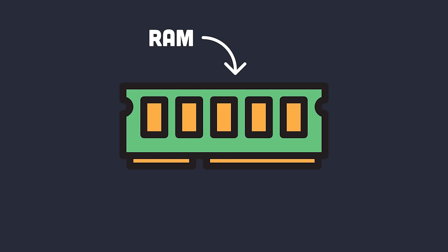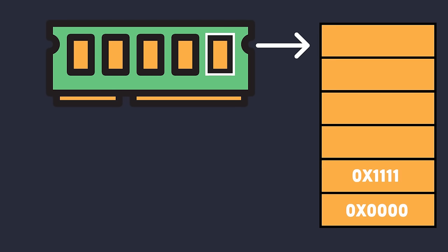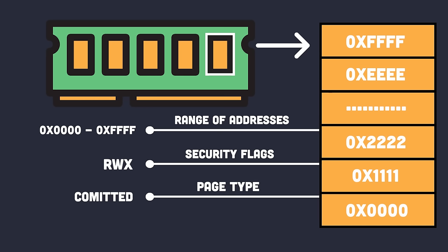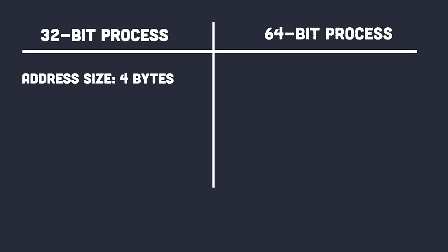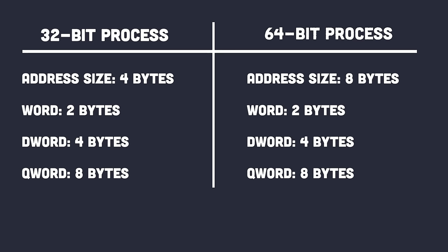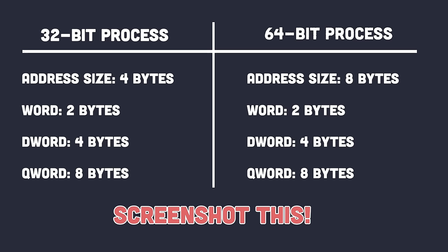Memory consists of multiple blocks called pages. Each page has properties such as size or range of addresses, security flags or execution permissions like read, write, and execute, and a page type indicating if it's committed or reserved. For a 32-bit process, memory addresses have a maximum size of 4 bytes (a DWORD). For 64-bit processes, addresses have a maximum size of 8 bytes (a QWORD). A word is 2 bytes, a DWORD or double word is 4 bytes, and a QWORD or quad word is 8 bytes.